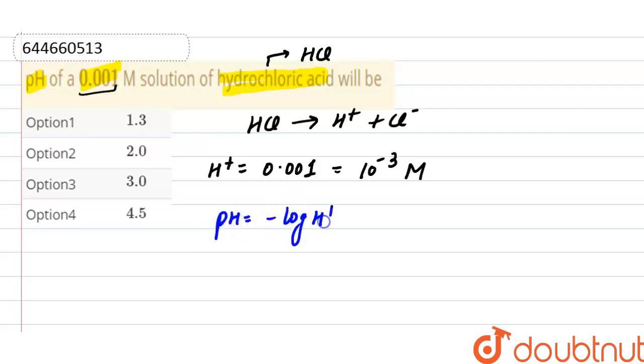Putting the value of H+ ion here, it will be minus log of 10 raised to the power minus 3. It will be minus into minus 3.